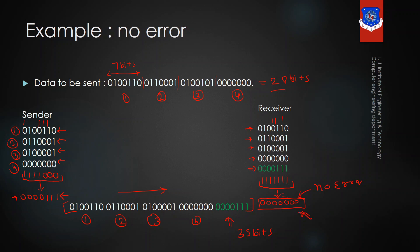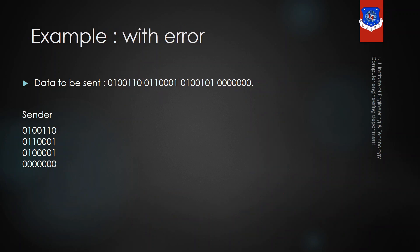If the answer is non-zero, it means there is an error. Let's see an example that contains an error. We are going to see the same example but the only difference is that the channel between the sender and receiver has error. In the checksum method, the sender will perform four steps. In the first step, the data will be divided into four segments, the data size is 28 bits, so each segment will be of 7 bits. This is segment 1, segment 2, segment 3, and segment 4.